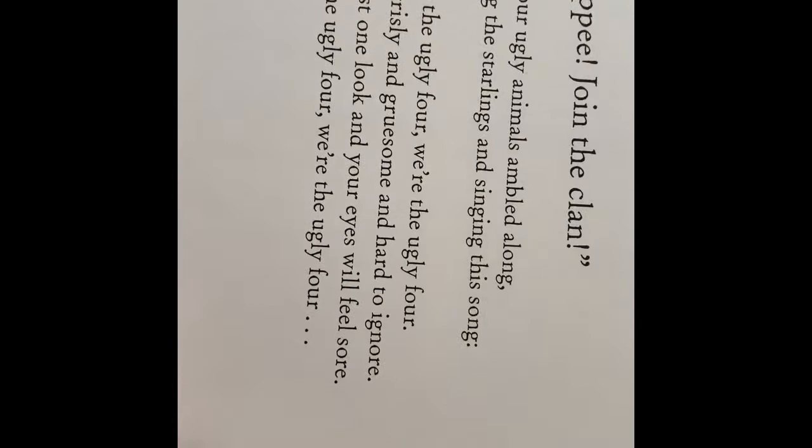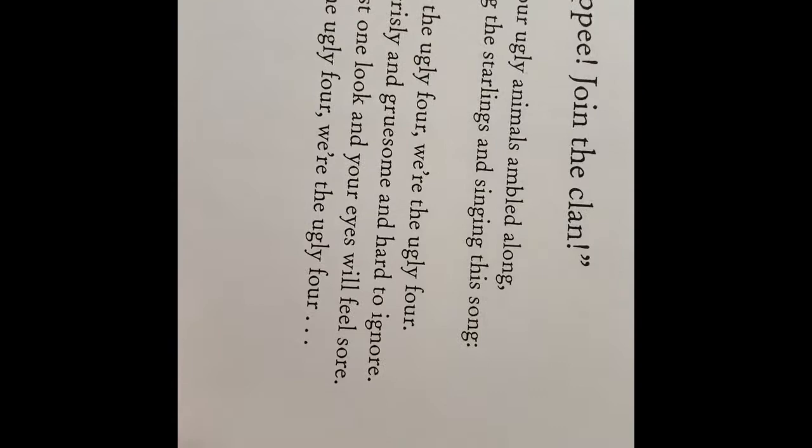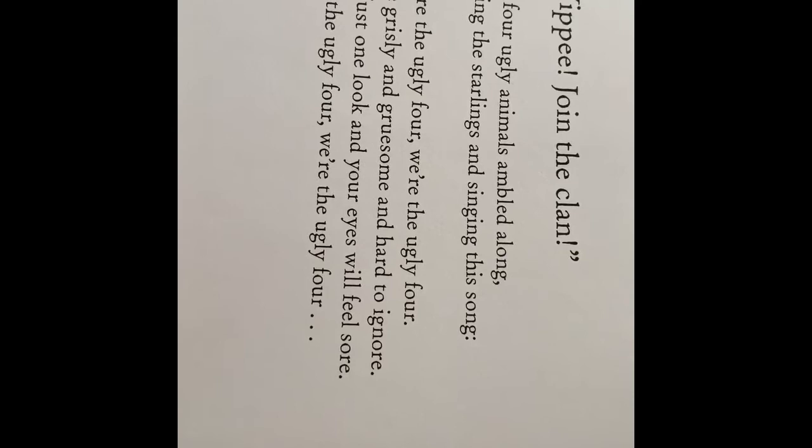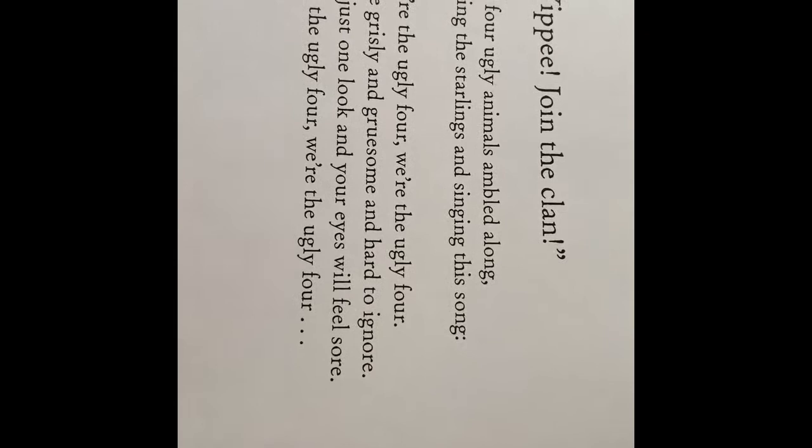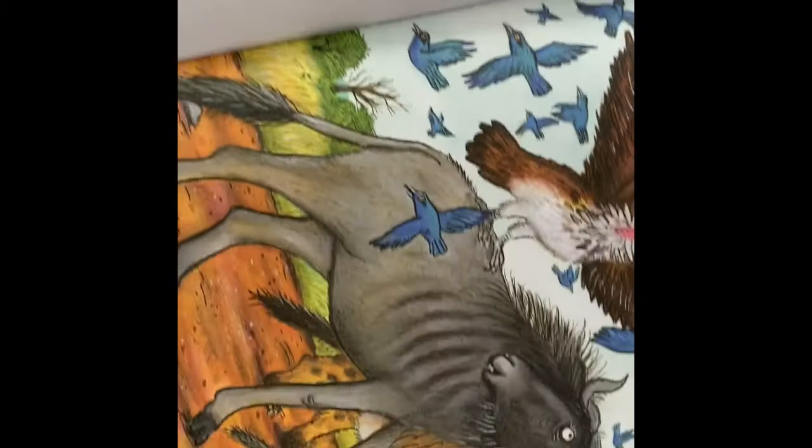'Yippee, join the clan!' The four ugly animals ambled along, scaring the starlings and singing this song: 'We're the ugly four, we're the ugly four — we're gristly and gruesome and hard to ignore. Just take one look and your eyes will feel sore — we're the ugly four!'